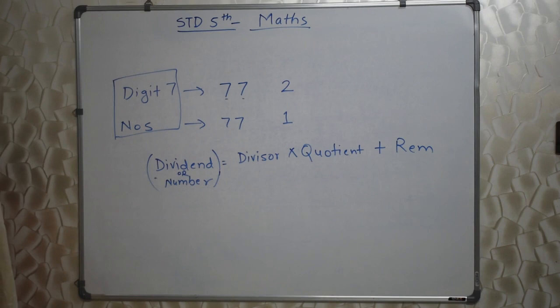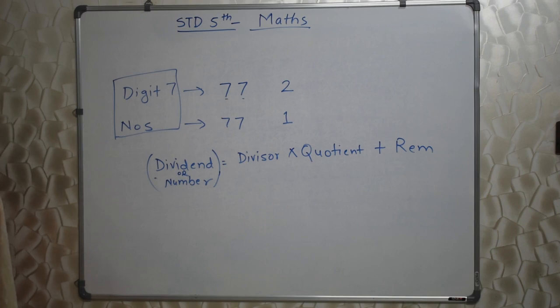Ream and gross — it is nothing but conversion. You should know how much is one dozen, how much is one gross, and what their relation is. It is clearly mentioned in the book.